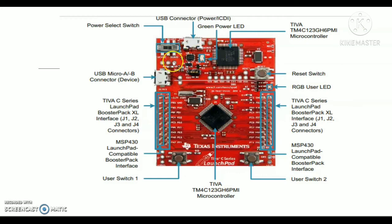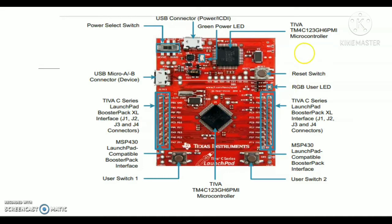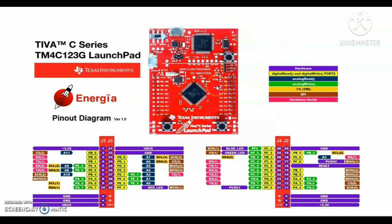The Launchpad is divided into two parts. The emulator part is used to upload programs into the chip — no external programmer is needed. Just connect a USB cable; the LED indicates power on. The switch should be set to debug mode. The main chip is the TM4C123GH6PM. The GPIO pins are available for connecting external sensors or motors. There are two on-board switches, three LEDs (red, blue, and green), one RGB LED, and a reset switch.